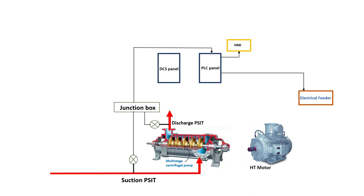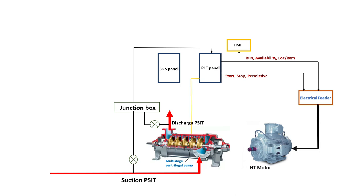We have different digital output signals like start and start permissive going to the electrical feeder. At the same time, we receive digital input signals from the electrical feeder — those control signals include run feedback, availability, and local/remote indications. These are the different control signal loops between the PLC and the electrical feeder. The electrical feeder in turn powers up the HT motor.